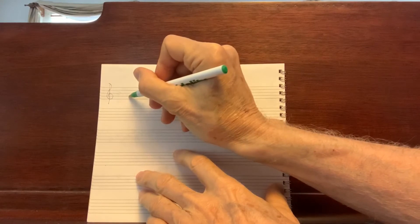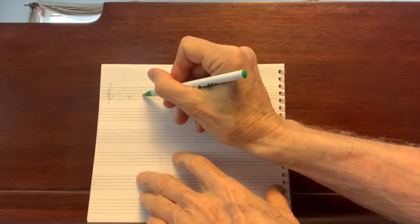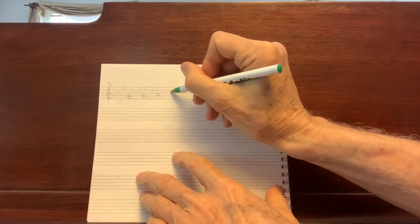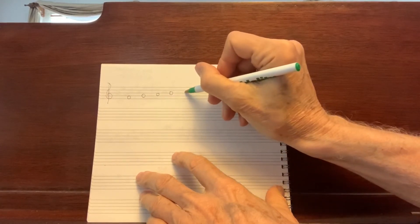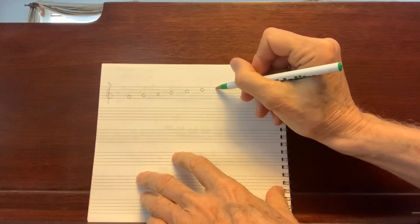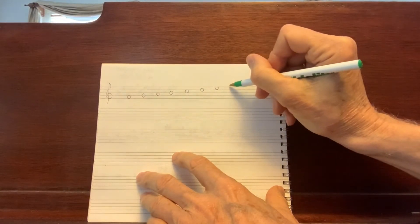So we begin as usual with our G clef and we'll begin on the first space: F, G, A, B, C, D, E, and F.